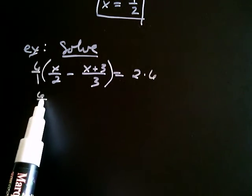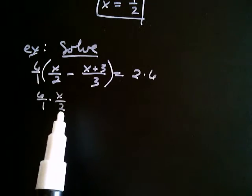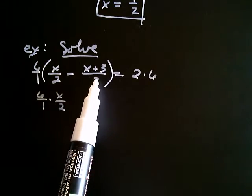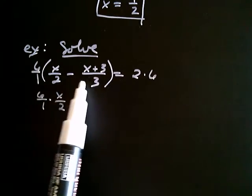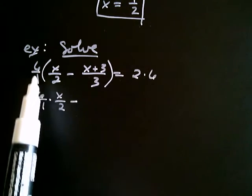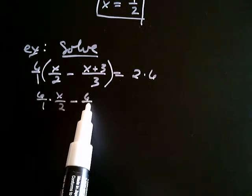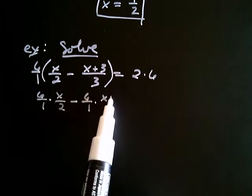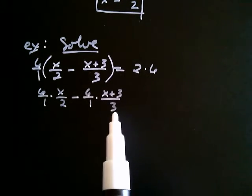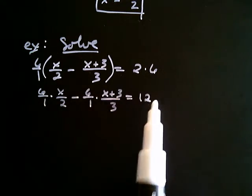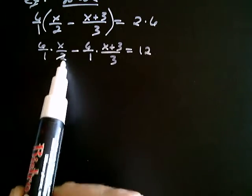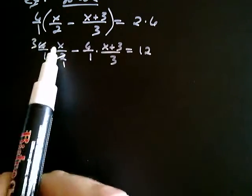As usual, we're going to distribute the 6 over 1. So it's going to be 6 over 1 times x over 2. Now positive 6 over 1, remember we think of the negative as belonging with the fraction that follows. So a positive 6 over 1 times a negative fraction. Positive times a negative is going to be a negative. A negative what? Well, whatever I get when I multiply 6 over 1 times this fraction, which is x plus 3 over 3. And on the right-hand side I just get 2 times 6, which is positive 12.